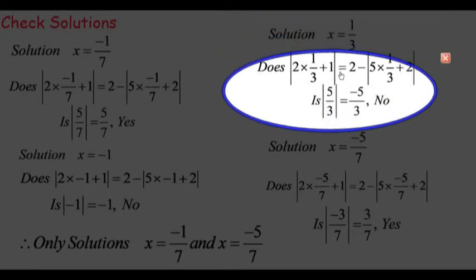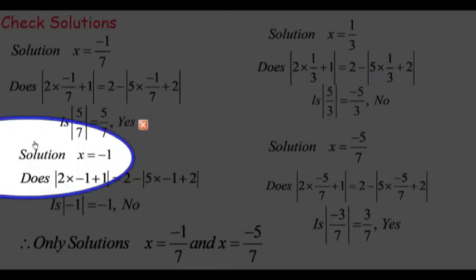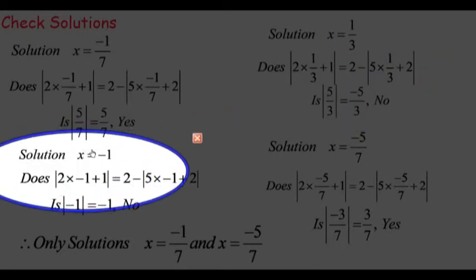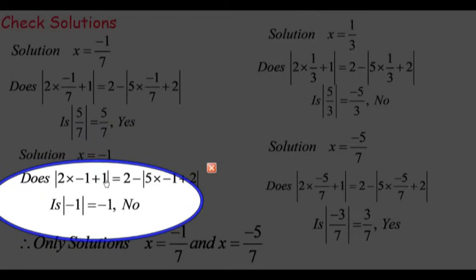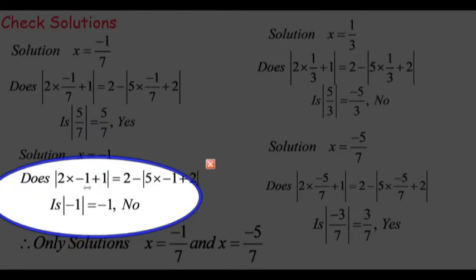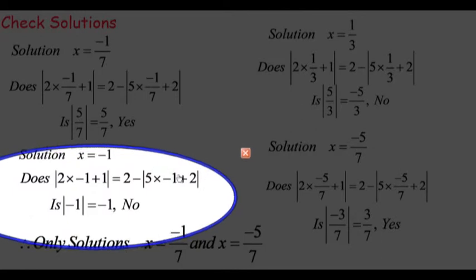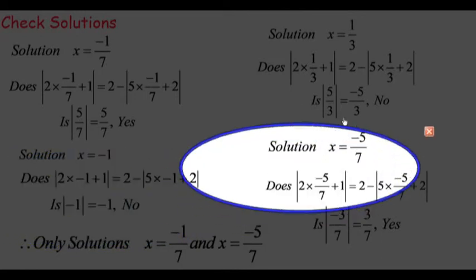How about x = -1? When you put x = -1 in, you end up getting: is the absolute value of -1 equal to -1? That's not the case.